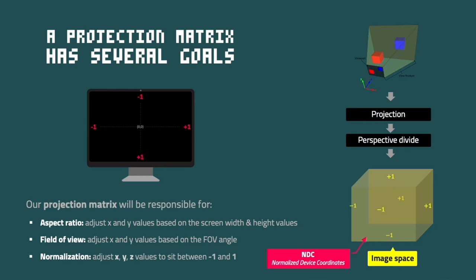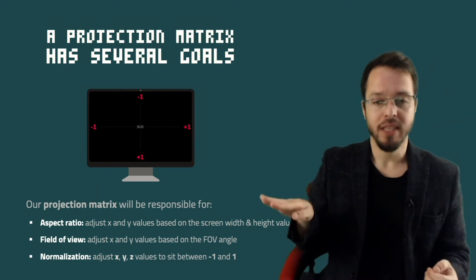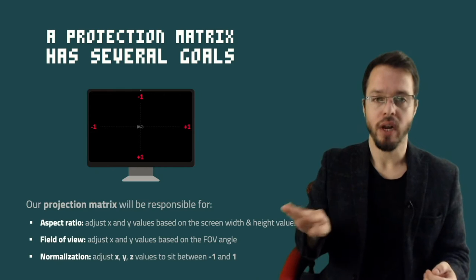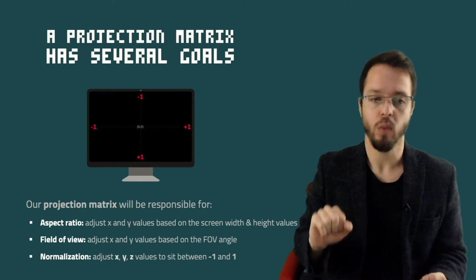If you ever read a book or article that mentions NDC — normalized device coordinates — it means these coordinates, these vertices, after projection and perspective divide. We have to project them and divide by the z component so we get this normalized minus-one-to-one cube-like thing. This is what we call image space. So these are the three tasks we're going to have to achieve. Let's start looking at them one by one — let's look at the easiest one, which is the aspect ratio.